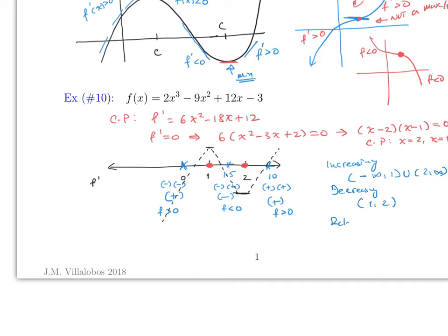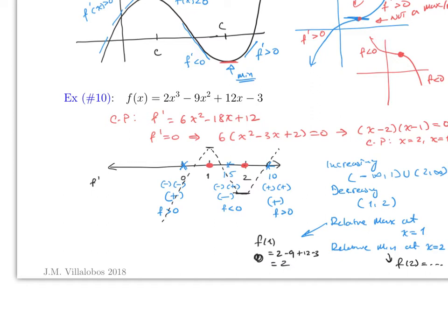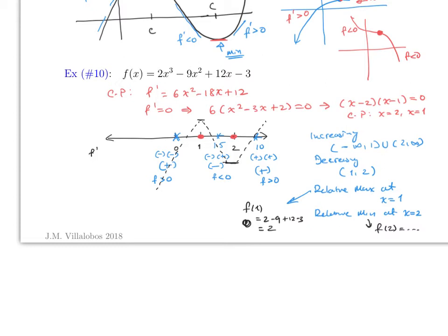So f is increasing on (-∞, 1) and (2, ∞), and decreasing on (1, 2). There is a relative maximum at x = 1: f(1) = 2 - 9 + 12 - 3 = 2. And a relative minimum at x = 2: just plug x = 2 into the original function to find that value.